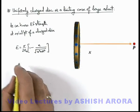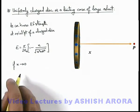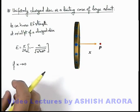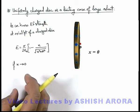Now let's consider a situation if x is tending to zero. If this point P is brought close to the disc, when x becomes zero, you can see this point P will approach the surface of the disc.